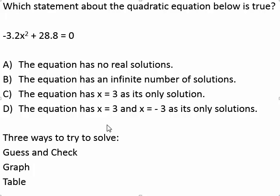Let's take a look at this problem. Which statement about the quadratic equation below is true? Negative 3.2x squared plus 28.8 is equal to zero.